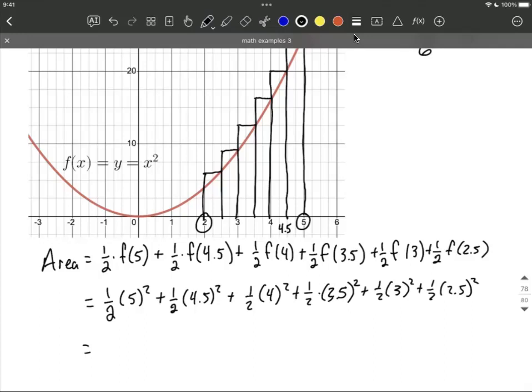Now you may notice that all of these have one halves being multiplied as part of them. So what I'm going to do is go ahead and factor out that one half, so that we can just say one half is going to get multiplied by five squared plus four and a half squared plus four squared and so on.